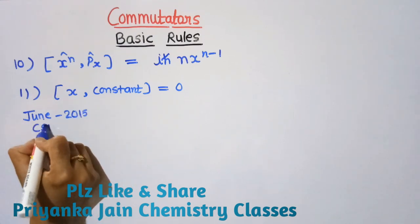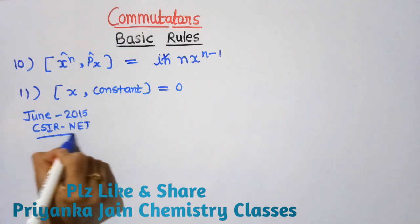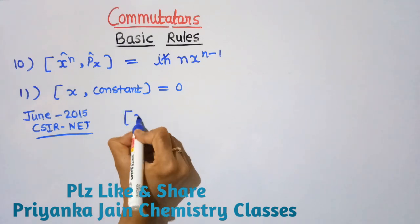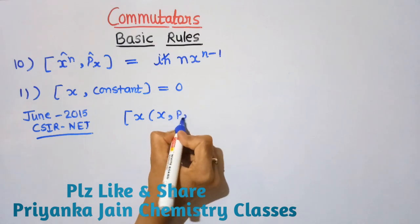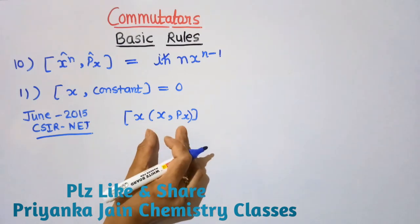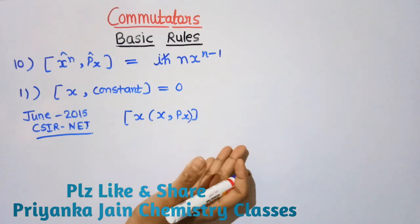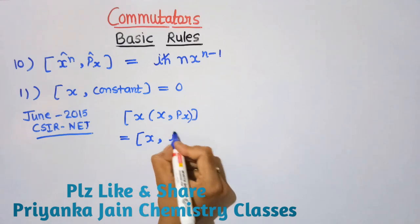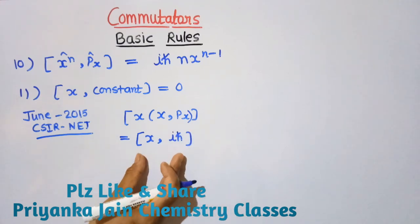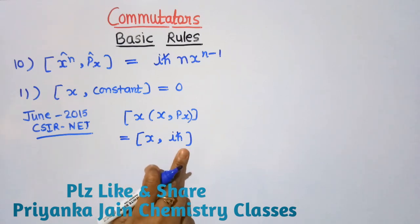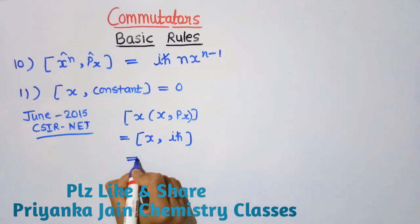A question from June 2015 CSIR NET exam asks for the commutator [x, x·px]. Using the rules, [x, x·px] = [x, iℏ] since [x, px] = iℏ. Because iℏ is a constant and the commutator of x with any constant is zero, the answer is zero.